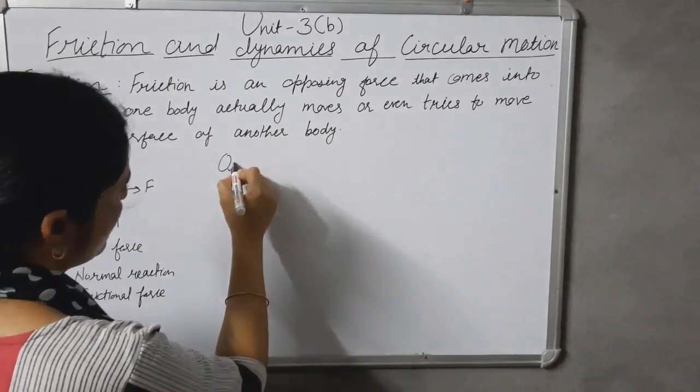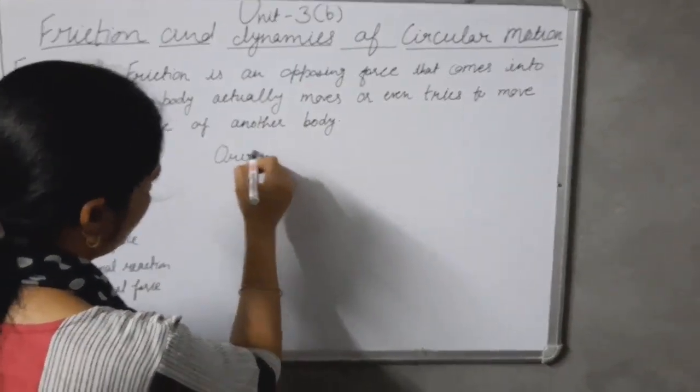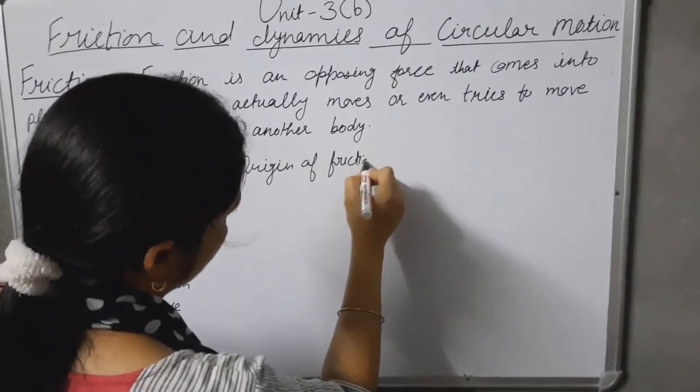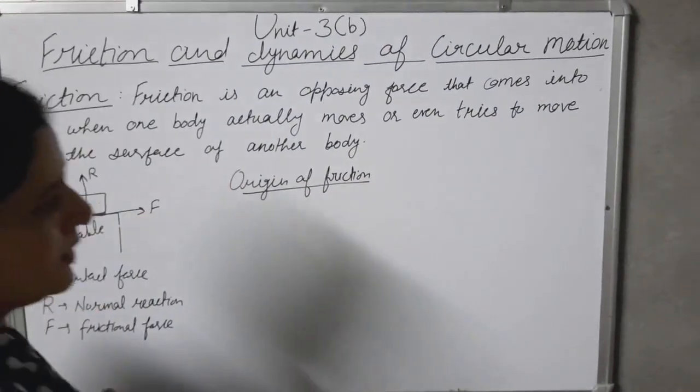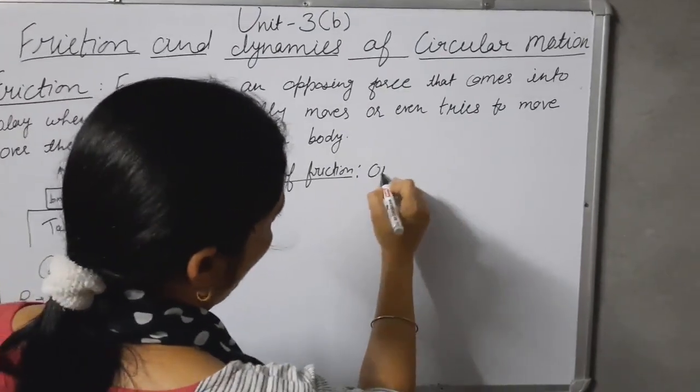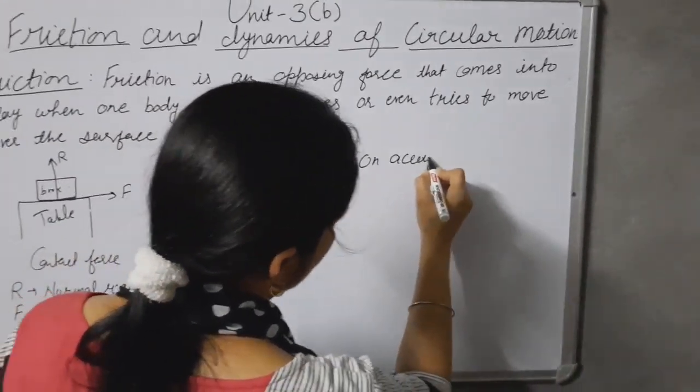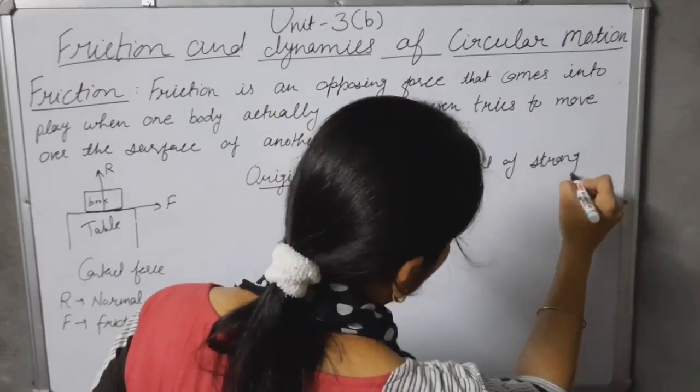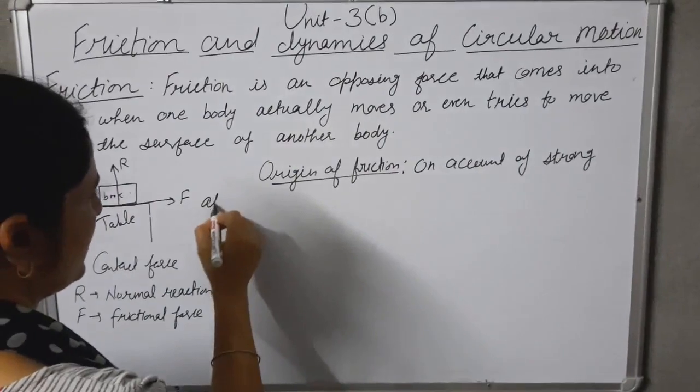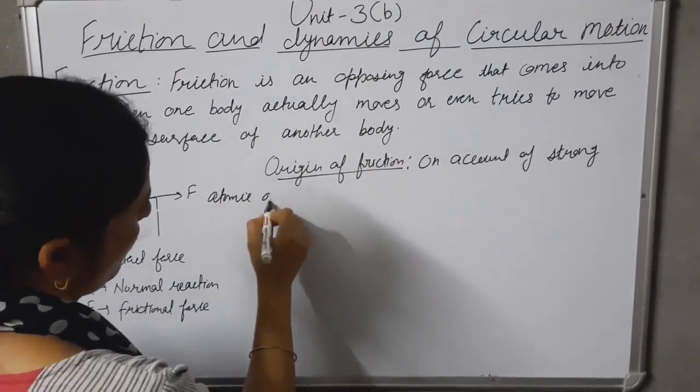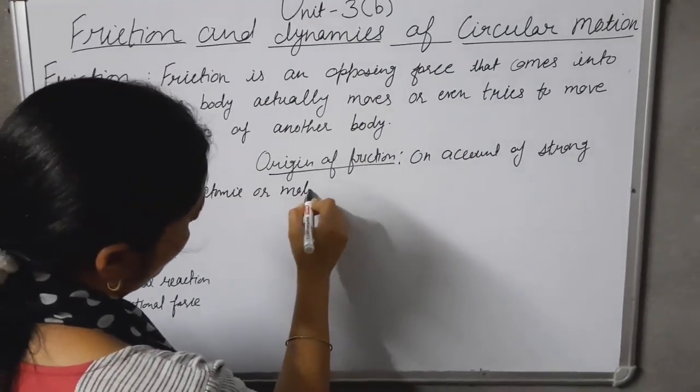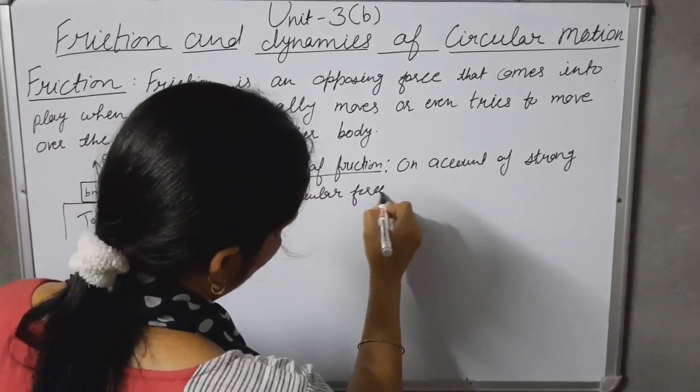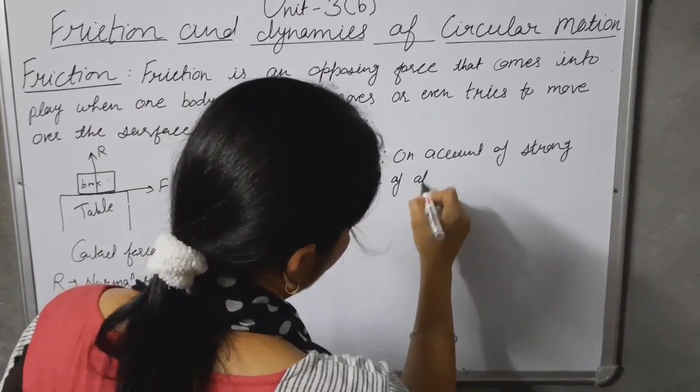Next is origin of friction. Friction arises on account of strong atomic or molecular force of attraction.